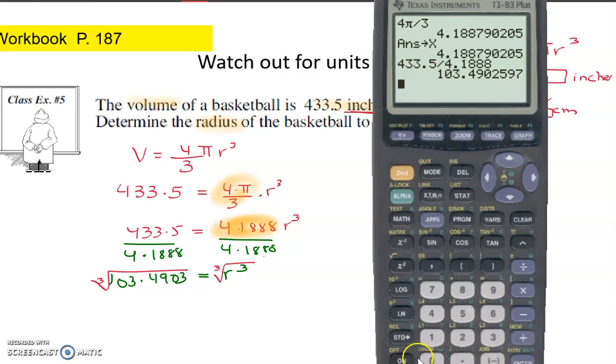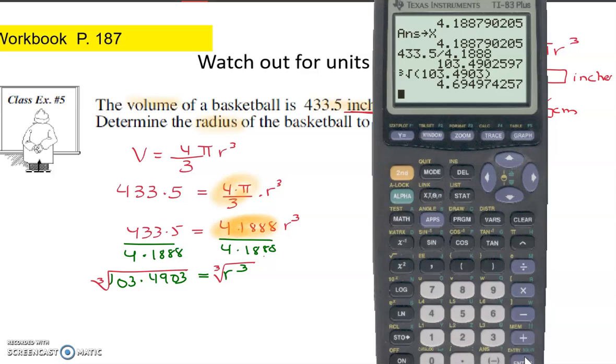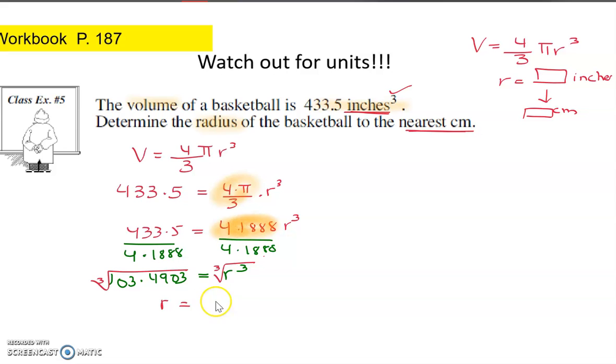So I'm going to go ahead and cube root that answer. So cube root is under math, the fourth option, and then I will put that number in, 103.4903. You can use more decimals since it's already in front of you, but 4 is okay. And that gives me my r, which comes out to be 4.69. And then you can, again, leave more answers in there. So 4.6949 or 5.0.